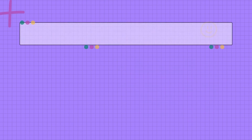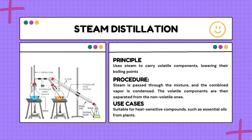The next type is steam distillation. Steam distillation is a method that uses steam to elevate volatile components from a mixture at lower temperatures. It is ideal for extracting delicate substances like essential oils from plants without subjecting them to high temperatures. The principle acts like an elevator for volatile components — it lowers their usual boiling points, making them escape more easily.